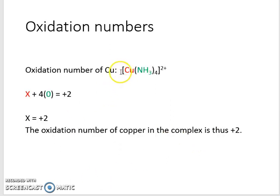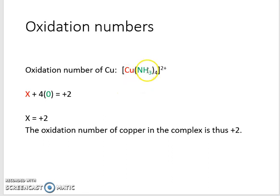In this case our metal complex has got a charge of plus two, so we need to take this into consideration when we do our oxidation state calculation. We have our copper which is the unknown — that's x. We have ammonia here, which is also a ligand. The ligand name is amine, and this amine ligand has got no charge.